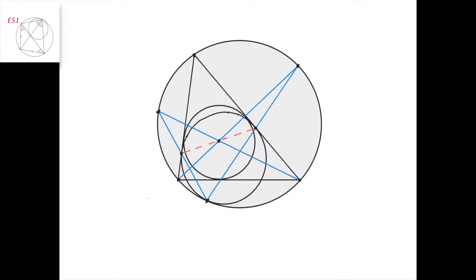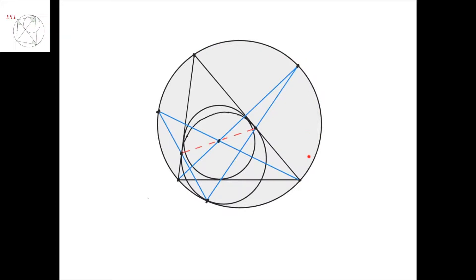Similarly, if we take this line defined by the point of tangency of the two circles and the point of tangency of the mixtilinear incircle and this line, it would intersect this circle at this point, which would be the midpoint of this arc. And this angle bisector intersects the circumcircle at the same midpoint of this arc.